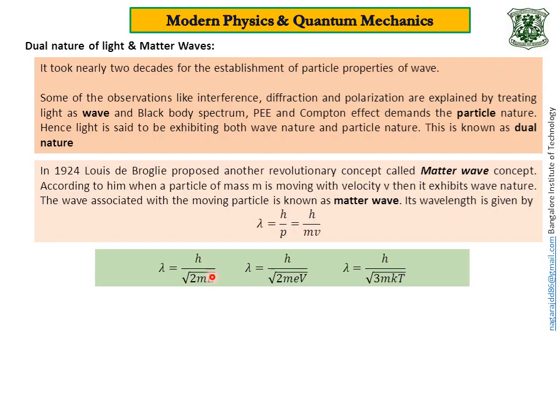See, when you call something as wave, certain parameters will come to your mind. For example, wavelength, frequency, amplitude, phase, time period are the wave parameters. Similarly, when you call something as particle, some parameters will come to your mind. What? Mass, momentum, kinetic energy, potential difference, temperature, charge on the particle. You cannot talk about charge on the wave. At the same time, you cannot talk about wavelength of the particle.